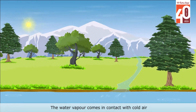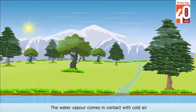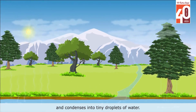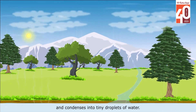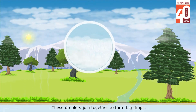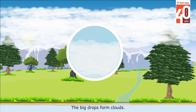The water vapour rises up in the air. The water vapour comes in contact with cold air and condenses into tiny droplets of water. These droplets join together to form big drops. The big drops form clouds.